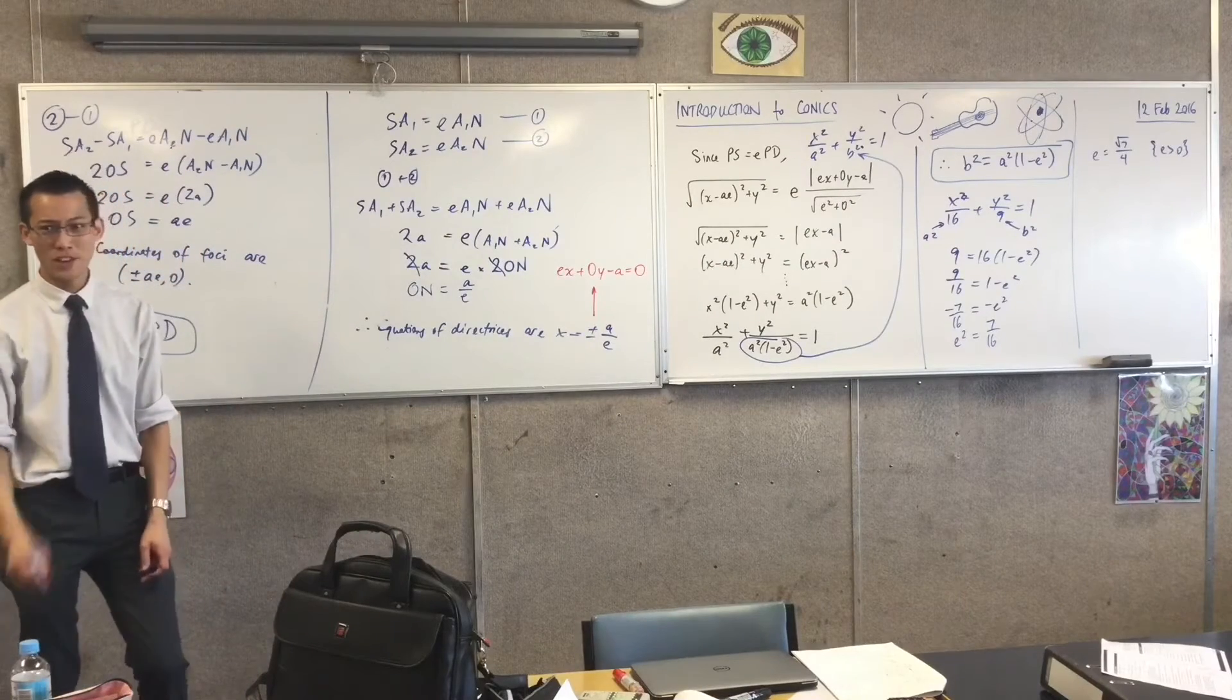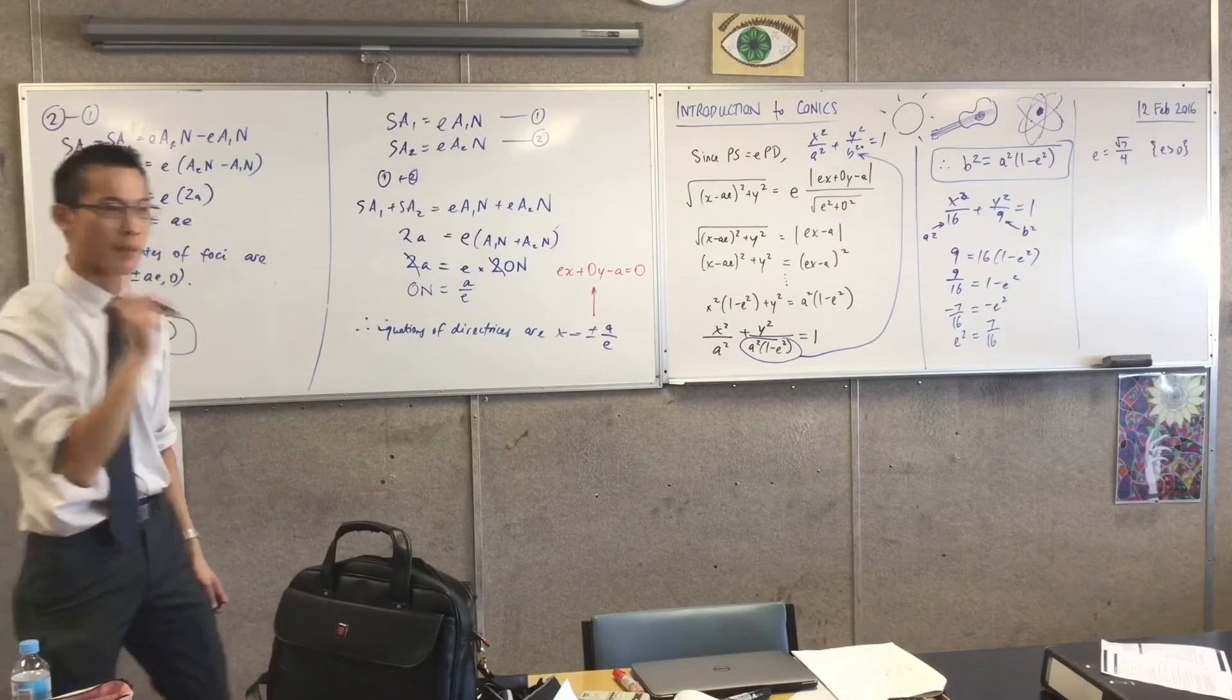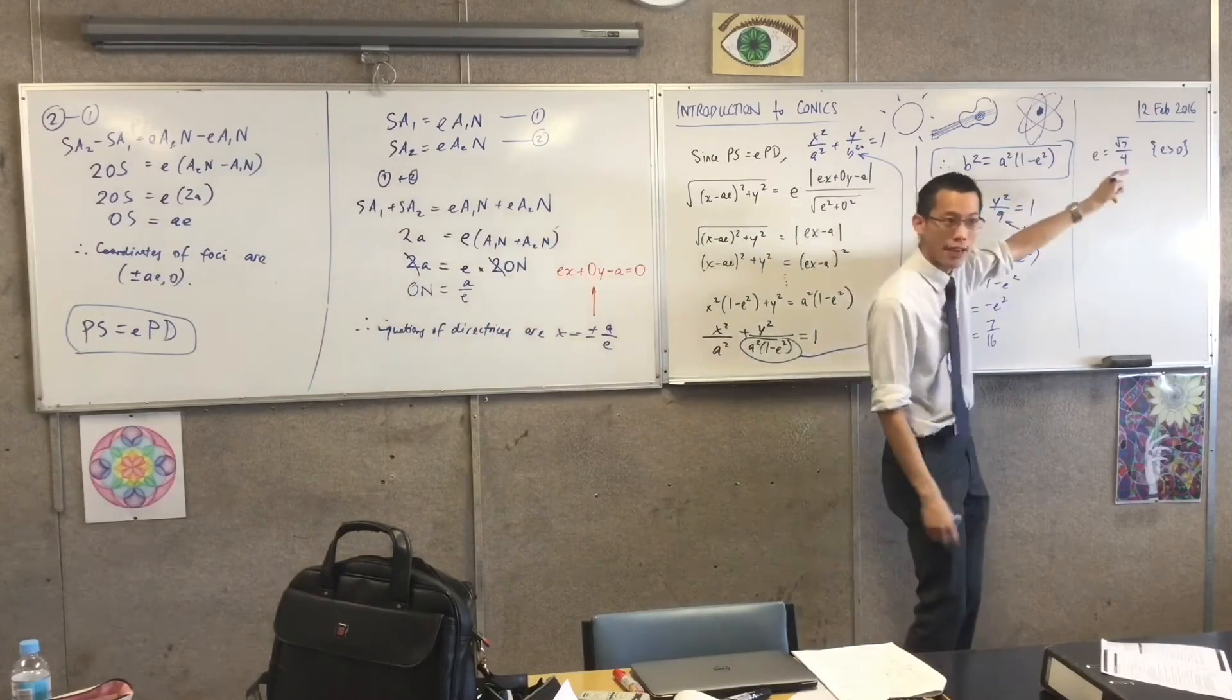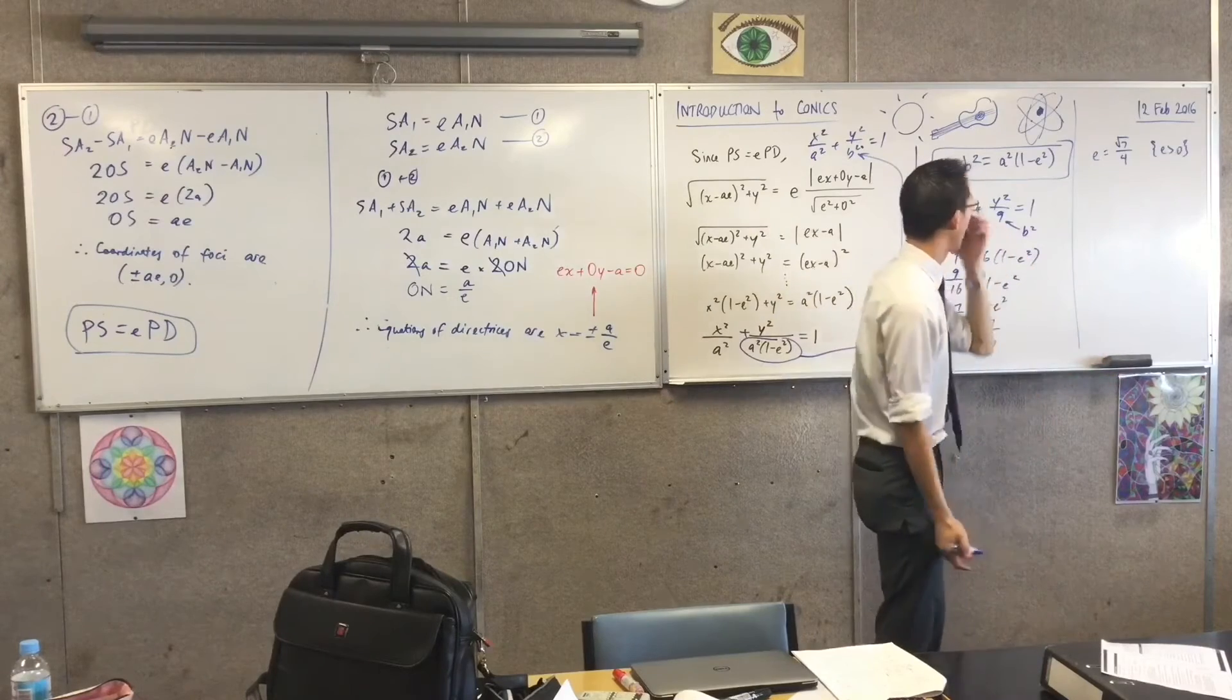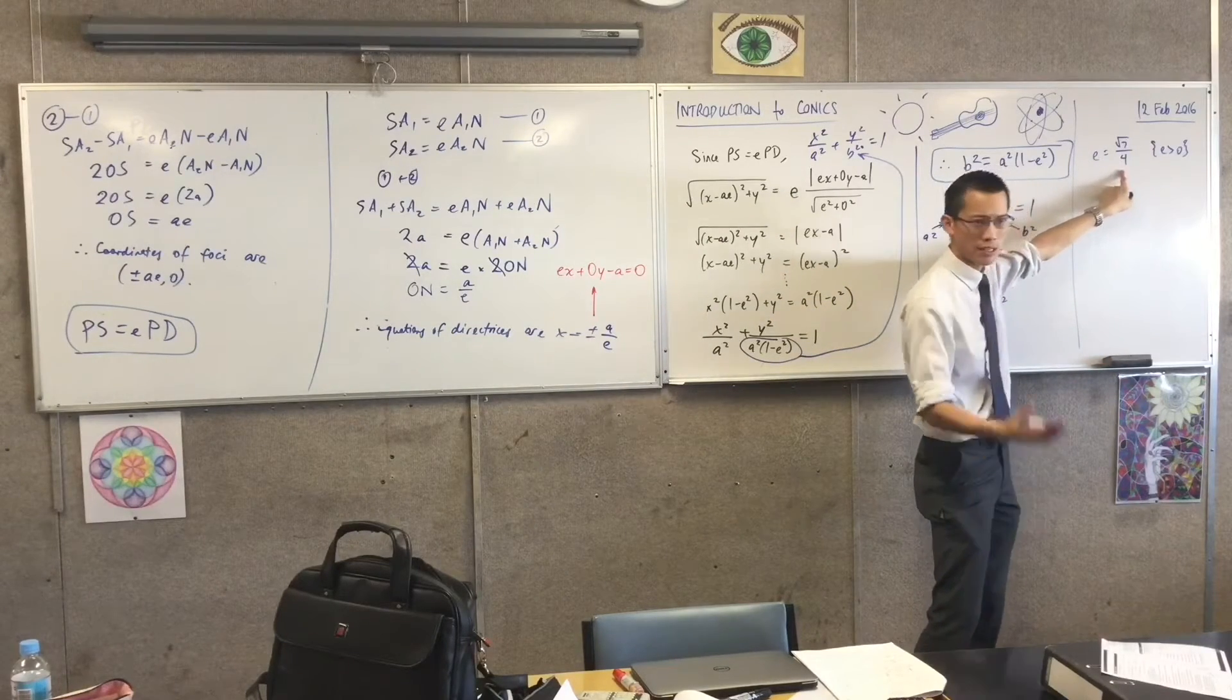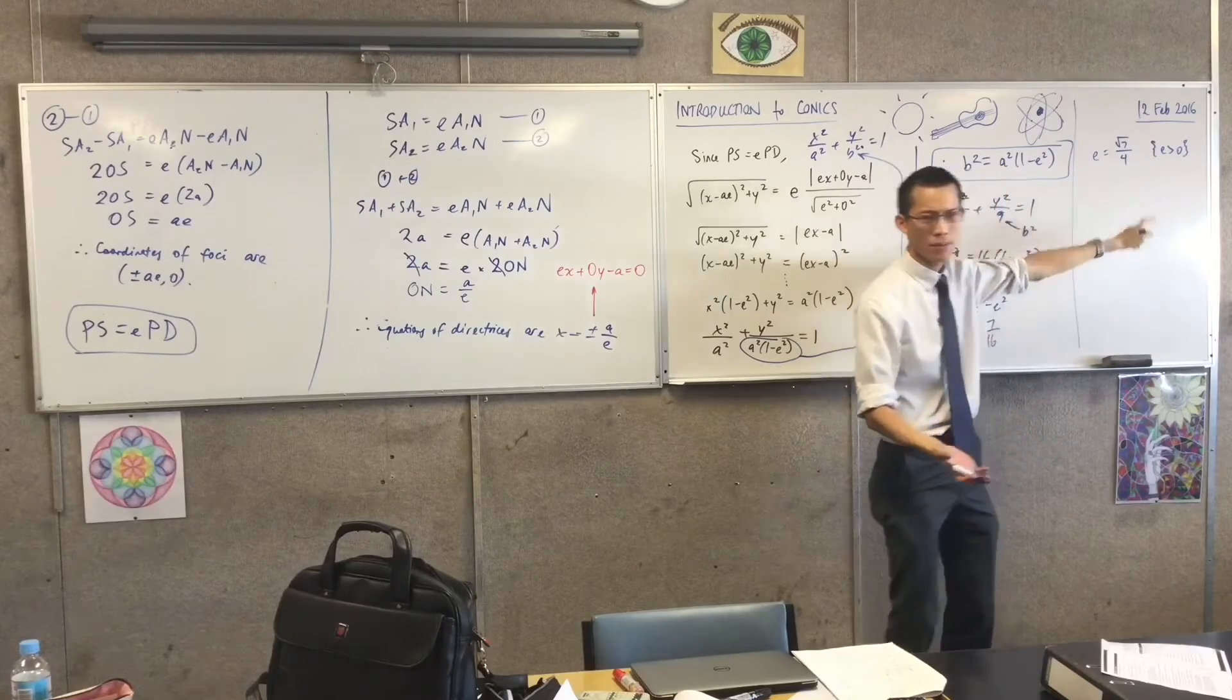That's pretty cool. Notice, by the way, two things. Number one: this is not a half. Do you remember the first ellipse we did? We chucked it a half and then it out popped an ellipse. This is not a half. What is root 7 on 4? Does it have a value?